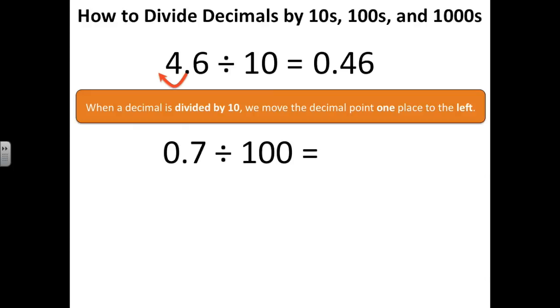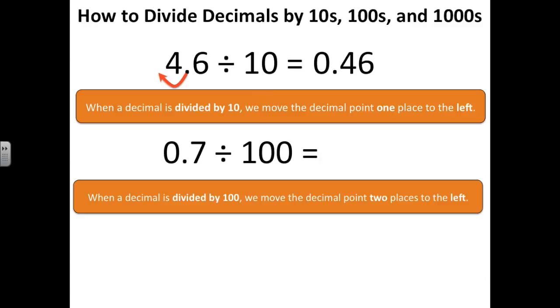7 tenths divided by 100. We also learned that when a decimal is divided by 100, we move the decimal point two places to the left, making it 100 times smaller. So our answer is 7 thousandths.